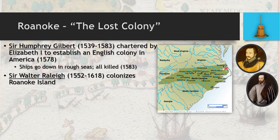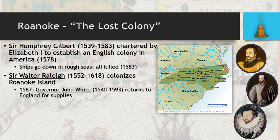Roanoke has gone down in history as one of the very first major American mysteries related to European colonization. In 1587, the governor of Roanoke, a man named John White, decides to leave behind several hundred colonists to return to England for supplies. The journey to get back to England is a very long one — by ship, with no real accurate navigation, it takes several months to cross the Atlantic Ocean. So he leaves behind 100 colonists, including 26 women and children on Roanoke.